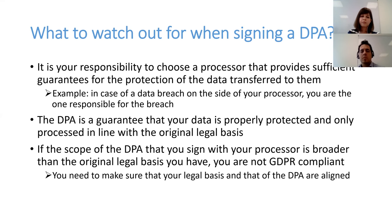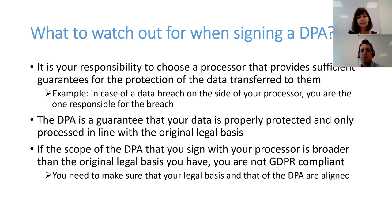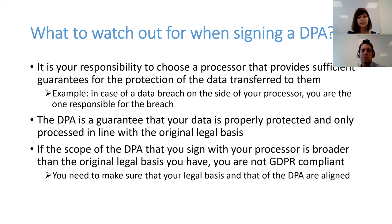One of the most important questions of a data processing agreement is whether your data processor provides sufficient security and technical measures to ensure your data is duly protected. Under the GDPR, if there is a data breach even on the side of your data processor, you as a data controller may be held responsible for that breach. It is very important that you ensure your data processor will not end up in a data breach, and if such a breach happens, there are sufficient measures to decrease its effects and that you will be informed in a timely manner so that you can give notice to data subjects and data protection authorities.